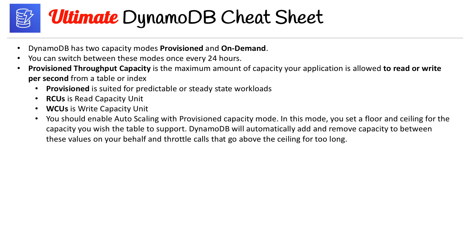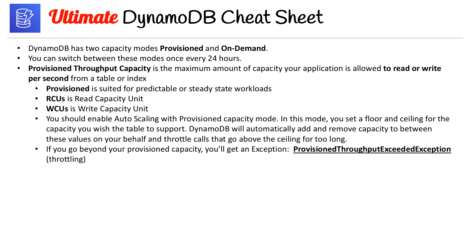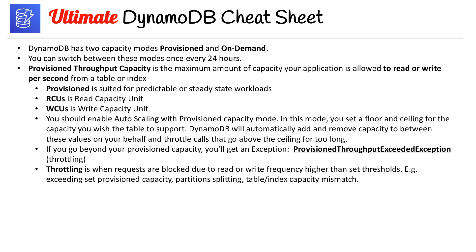DynamoDB will automatically add or remove capacity between your floor and ceiling values on your behalf, and throttle calls that go above the ceiling for too long. If you go beyond your provisioned capacity, you'll get a ProvisionedThroughputExceededException. For the exam, you 100% want to know this — it will absolutely show up. Throttling occurs when requests are blocked due to read or write frequencies higher than the set threshold. Examples for exceeding set provisioned capacity include partition splitting and table-index capacity mismatch.